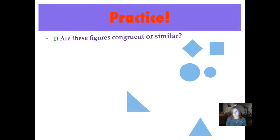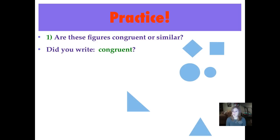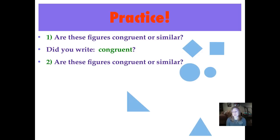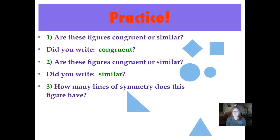Let's do some practice. Number one: are these figures — a rhombus or square — congruent or similar? Pause and push play when you've written it down. Did you write congruent? It's hard to tell when figures are rotated differently, but this is the exact same size and shape, so they are congruent. Number two: are these figures congruent or similar? Did you write similar? They're both circles but different sizes — so they are similar, but not congruent.